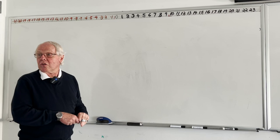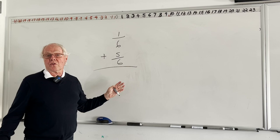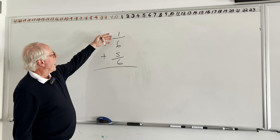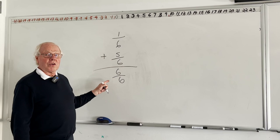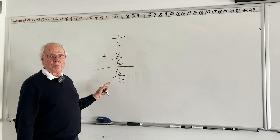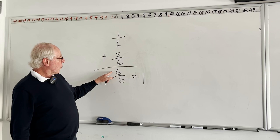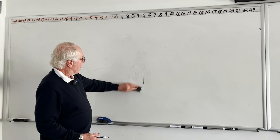The next one is one-sixth plus five-sixths. At any point, before I put the answer up, you can always stop the video and figure it out yourself. This is the same thing — the denominator is already the same for both. So we simply add one of these to five of these, and that gives us six-sixths. Now don't leave this as your final answer. Remember, all fractions are division problems. Six divided by six is one. The principle: any number divided by itself is always one.